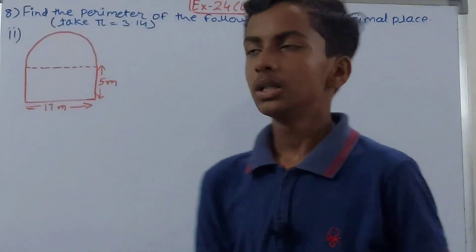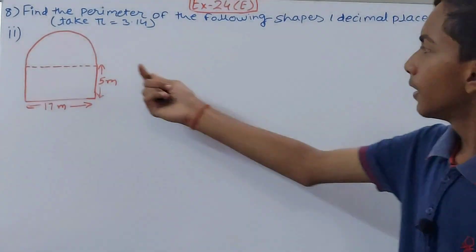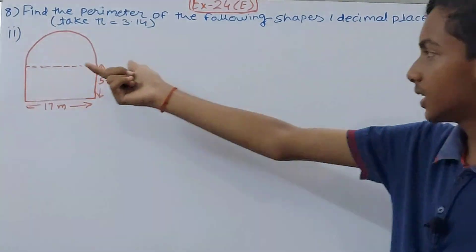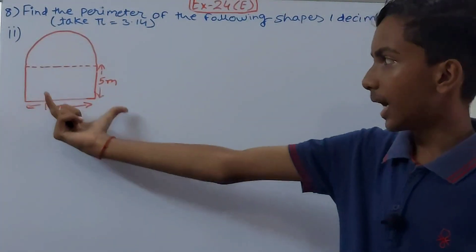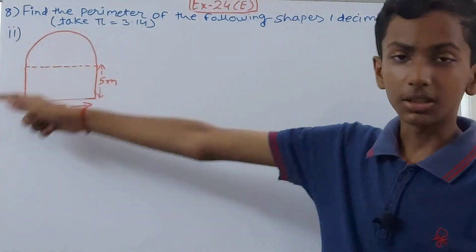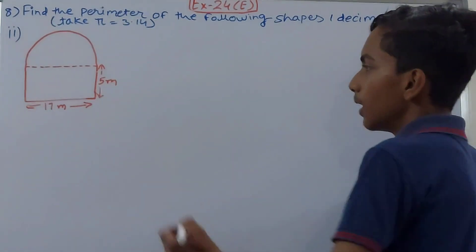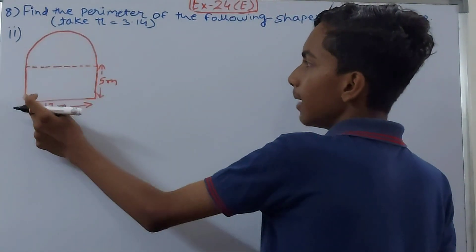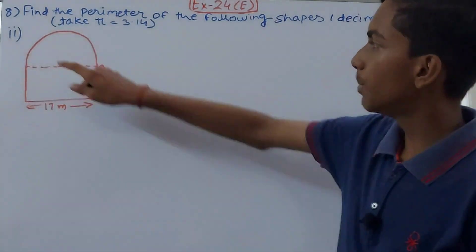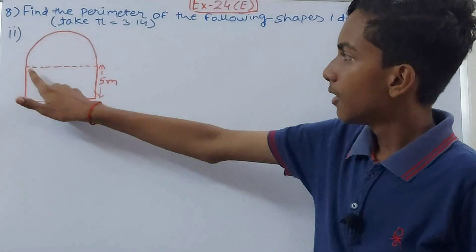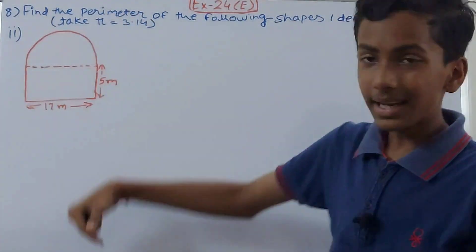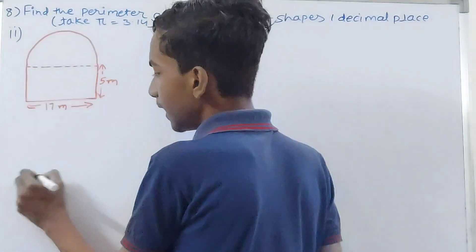Now let's move on to the next part. This shape is a combined figure with a semicircle and a rectangle. We'll find the perimeter of the semicircle first — taking only the curved part, not the flat diameter line, because that line is inside the figure and not part of the boundary.